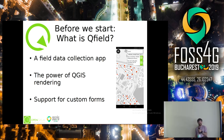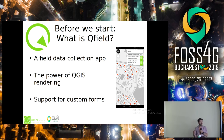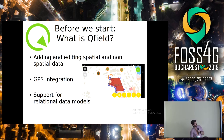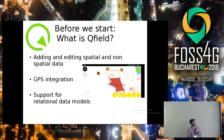So QField is basically a field data collection app. It has all the power of QGIS rendering below, and it's got support for custom forms. It's actually pretty similar to what we've seen in the last presentation about Input, because Input was based on it — that's why there are a lot of things shared between the two apps. It is possible to add and edit spatial data, so you can add and edit geometries — points, polygons, and lines. Of course it has GPS integration, and it also has support for relational data models, meaning you can have multiple tables so you can fill in child features or child entries of existing features.